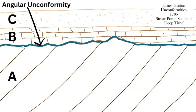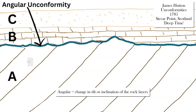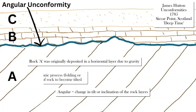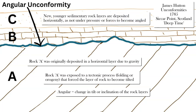The angular unconformity is the type that James Hutton saw at Siccar Point off the coast of Scotland near Edinburgh. He observed an angled, tilted rock layer — actually metamorphic — with a horizontal sedimentary rock above it. The angled rock layer labeled A is the older one that has been tilted by tectonic forces, possibly through folding or orogeny.